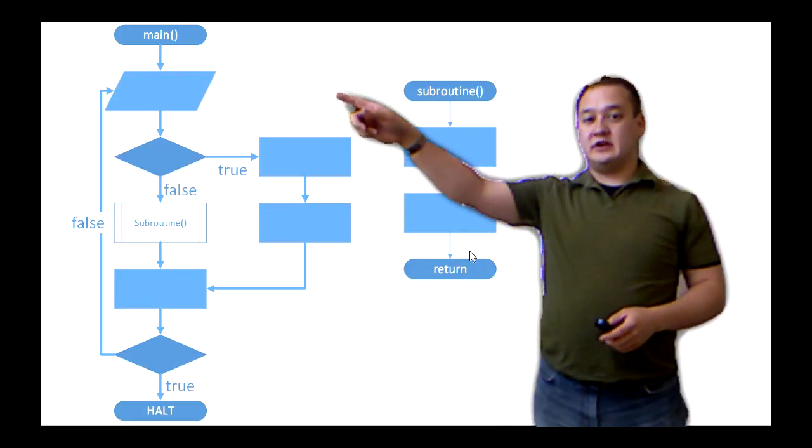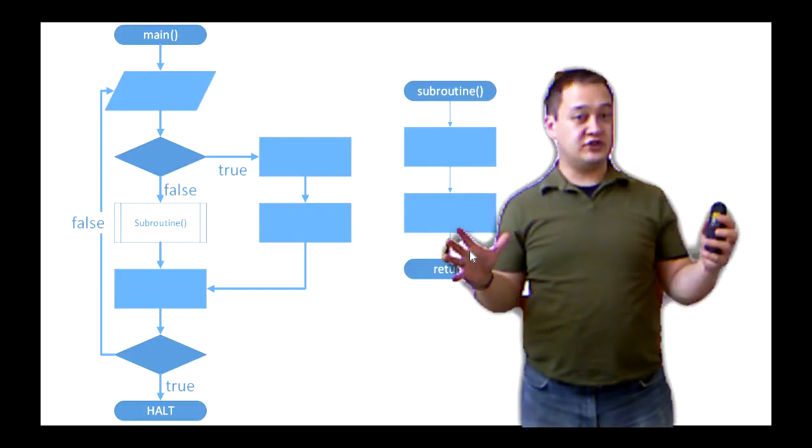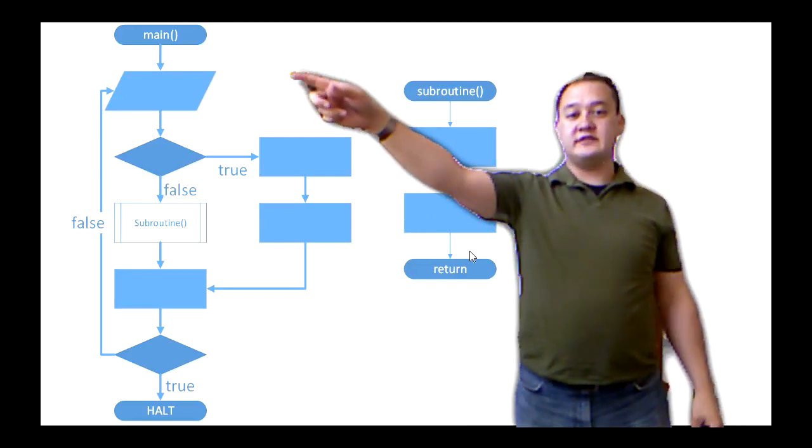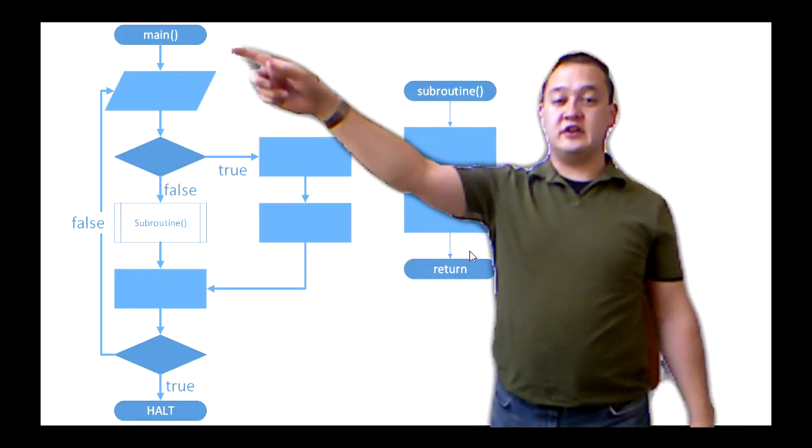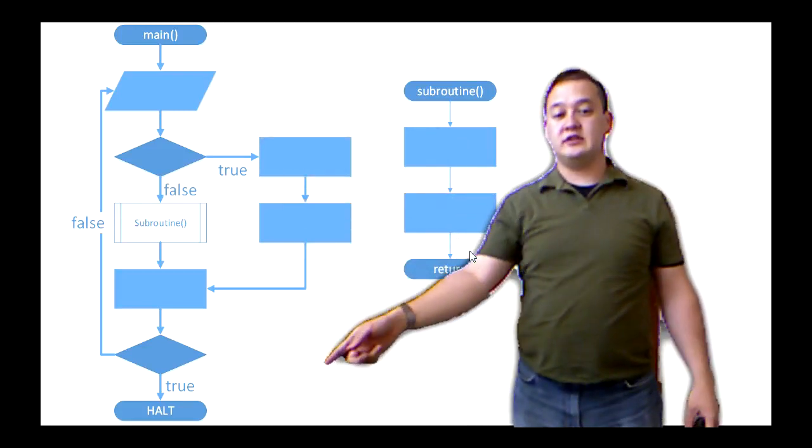So the big thing up here is this main. We start there. Every time we start a function or end a function, we have these ovals that indicate the start or stop. So here we've got the main being defined, and then we've got the halt of the main program down here.